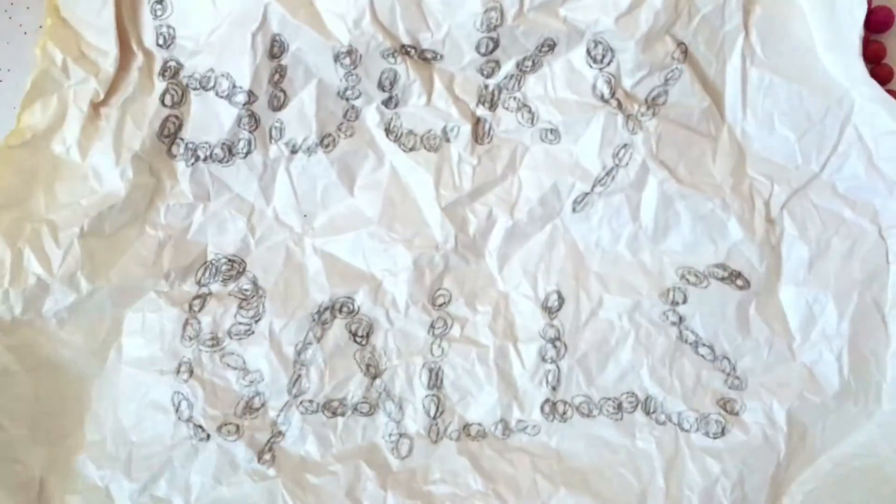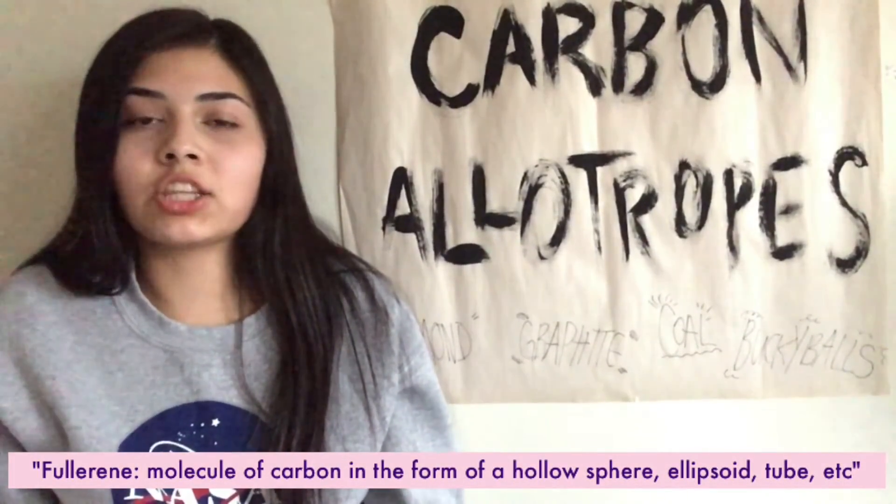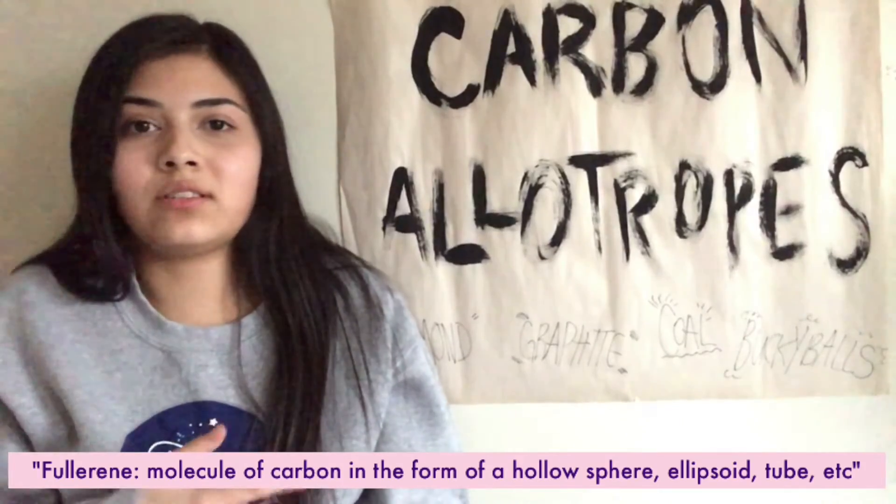Last but not least, buckyballs. Buckyballs are a recent discovery and were named after the scientist and architect Buckminster Fuller, which is why they're shortened to buckyballs. He created a geodesic dome that resembles the buckyball. A buckyball is a type of carbon nanomaterial called a fullerene. Fullerenes are made from molecules of varying sizes composed entirely of carbon that can take the shape of tubes, spheres, and ellipsoids. Buckyballs have been the subject of intense research, especially in nanotechnology, because of their unique chemical properties and potential technological applications.